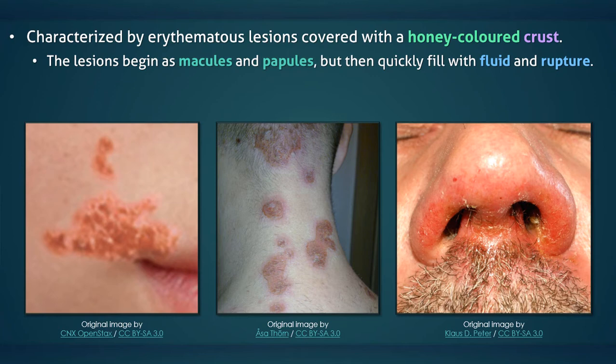In the third subtype, ecthyma, the lesions extend into the dermis, resulting in ulceration with filaceous borders.